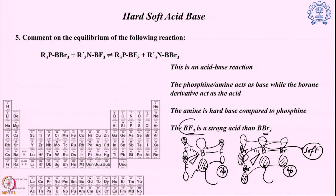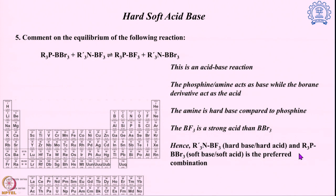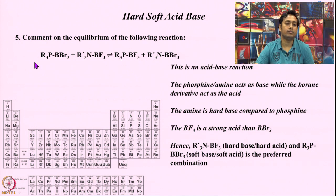Now we know BF₃ is the hard acid and BBr₃ is the soft acid. Combining them: hard acid-hard base is preferred — so amine to BF₃ is preferred — and soft acid-soft base is preferred — so phosphine to BBr₃ is preferred. These two combinations are more stable: through ionic interaction for the hard-hard pair and through covalent interaction for the soft-soft pair. This preferred combination is present on the left-hand side of the reaction. On the right-hand side it is phosphine-BF₃ (soft base-hard acid) and amine-BBr₃ (hard base-soft acid) — both mismatched and not preferable. So the equilibrium lies on the left-hand side.